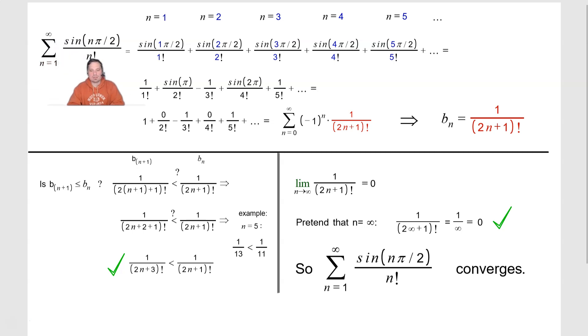First we need to write out a few terms. When n has the value 1, I would have sine of 1 pi over 2 divided by 1 factorial, then plus sine of 2 pi over 2 over 2 factorial, plus sine of 3 pi over 2 over 3 factorial, plus sine of 4 pi over 2 over 4 factorial, plus sine 5 pi over 2 over 5 factorial, and then dot dot dot to continue the pattern.